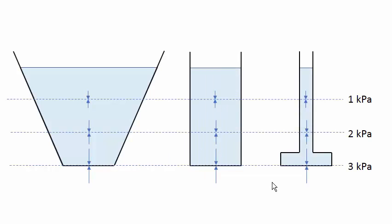This explains why we have 30 newtons of downward force inside the container, but outside the container resting on the table we only have the weight of the water inside — 12 newtons — plus the weight of the container itself. The counterbalancing force is the water pressure upward against this container: 18 newtons upward, reducing the total weight of this container on the table. So for any size or shape container, the pressure depends only on depth.